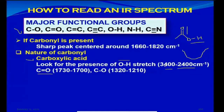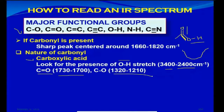If you see this broad stretch for the OH, it might belong to a carboxylic acid, and then you look in the carbonyl region. If you see a peak centered around 1700 to 1730 wavenumbers, then it is confirmed as a carboxylic acid. Along with this, there is also a carbon-oxygen single bond that would appear around 1200 to 1300 per centimeter, but the diagnostic peaks are the carbonyl and the OH — the OH being more prominent because it's a very broad, peculiar peak.